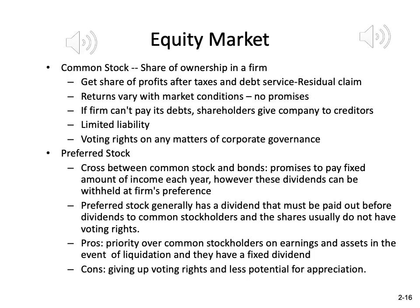Now we move on to the equity markets. First, we talk about common stocks. When we buy stocks, most of the time we are buying common stocks. When you purchase one share of common stock, you're getting one share of ownership in the company. For example, if you purchase one share of Apple, you have one share of ownership in Apple. You will get a share of profits after taxes and debt service — meaning after Apple pays all taxes, employee wages, expenses, and coupon and principal payments to bondholders. Whatever is left in profits will be shared by the common stockholders.